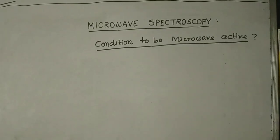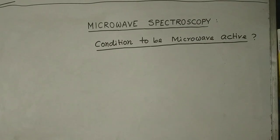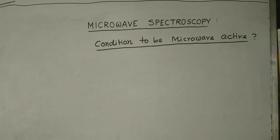Condition to be microwave active: microwave active means absorbing microwave radiation a molecule can change its rotation. Not all molecules are microwave active. To be microwave active — that is, to absorb microwave radiation to change its rotation — a molecule must have a permanent dipole moment.